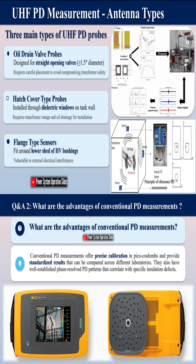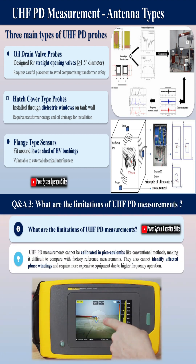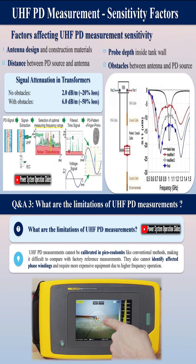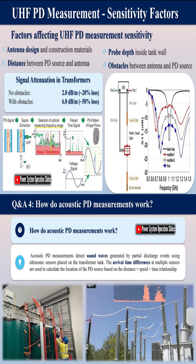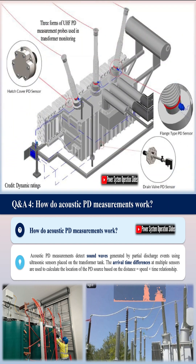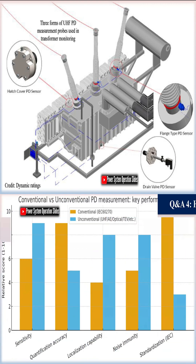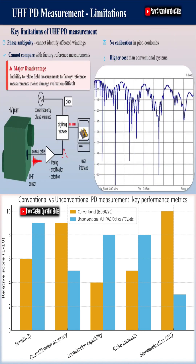Conventional electrical PD measurements, standardized by IEC 60270 and IEC 600763, have been practiced since the 1960s and remain the gold standard for factory acceptance testing and laboratory assessments. These methods measure apparent charge in picocoulombs (pC) using the bushing C1 capacitance as a coupling capacitor to decouple high-frequency PD pulses from both internal and external sources. For bushings without a capacitive tap, an external coupling capacitance is connected in parallel with the bushing, and the PD measurement system is connected to the sensors via coaxial cables. The conventional method allows precise calibration but requires a sufficiently high signal-to-noise ratio (SNR) in the measurement circuit to easily resolve the PD signal.